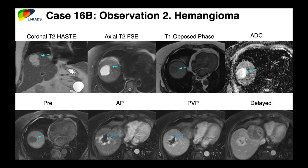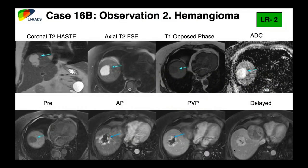Second-to-last case: a patient with an HCC who also had a separate finding higher up in the liver. This observation has very high T2 signal intensity — unlike the slightly gray T2 signal of HCC — and on arterial phase shows peripheral puddling rather than complete rim enhancement. It fills in progressively on portal venous and delayed phases. This was actually an LR2 hemangioma. A good reminder that benign findings can occur in cirrhotic patients — though usually hemangiomas get compressed by fibrosis, this patient had hepatitis B with a smooth liver contour.